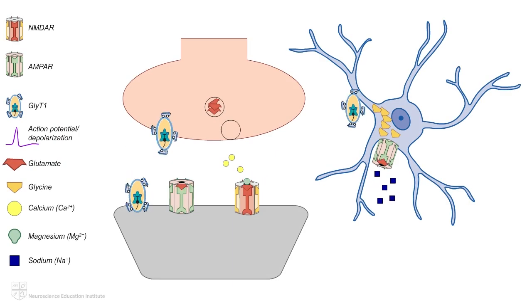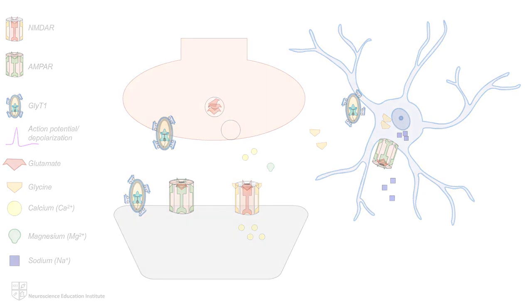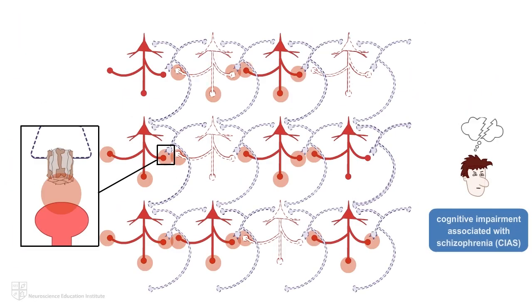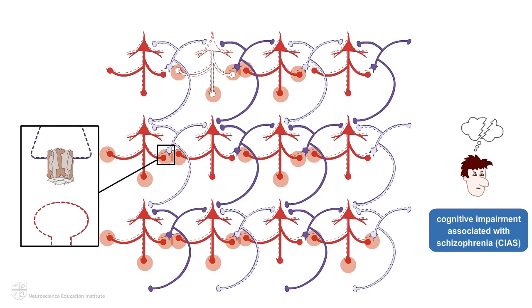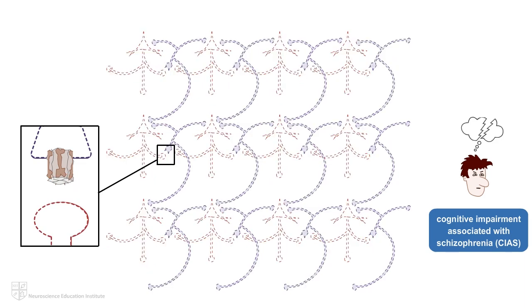As you can see from what we have learned in Parts 1, 2, and here in Part 3 of this animation series, proper functioning of the NMDAR requires a very finely choreographed dance involving precisely timed and tuned parts and movements. One misstep can lead to disastrous and widespread functional consequences, such as we see in schizophrenia.